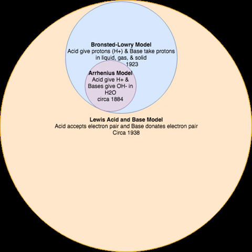All compounds of group 13 elements with a formula AX3 can behave as Lewis acids. Similarly, compounds of group 15 elements with a formula DY3, such as amines NR3 and phosphines PR3, can behave as Lewis bases. Adducts between them have the formula X3A→DY3 with a dative covalent bond between the acceptor A and donor D atoms. Compounds of group 16 with a formula DX2, such as ethers R2O or thioethers R2S, can also act as Lewis bases. For instance, carbon monoxide acts as a Lewis base when it forms an adduct with boron trifluoride of formula F3B·CO.